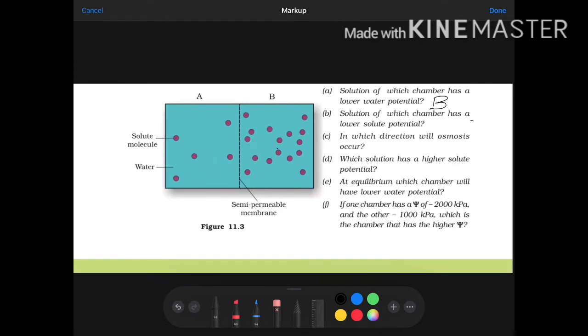Solution of which chamber has a lower solute potential? In this case, the solute potential is less. More the solute, less the solute potential. So again, B.